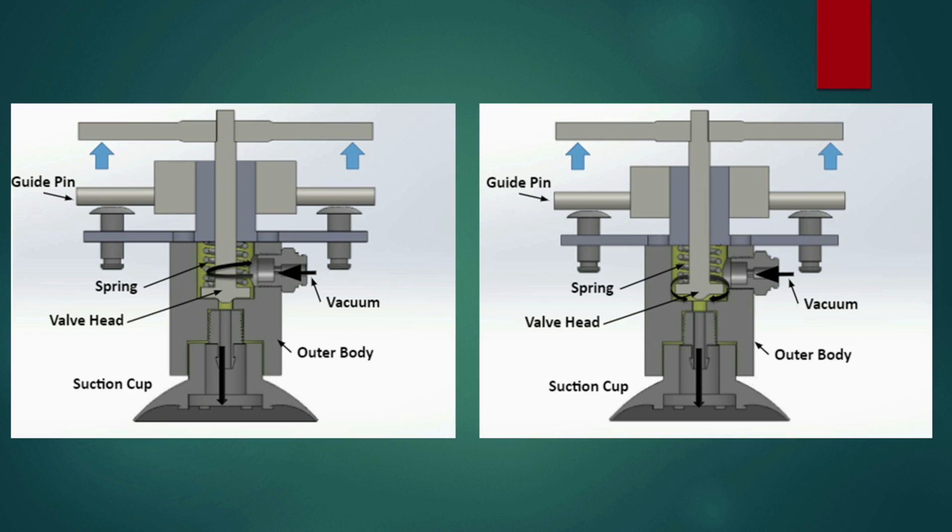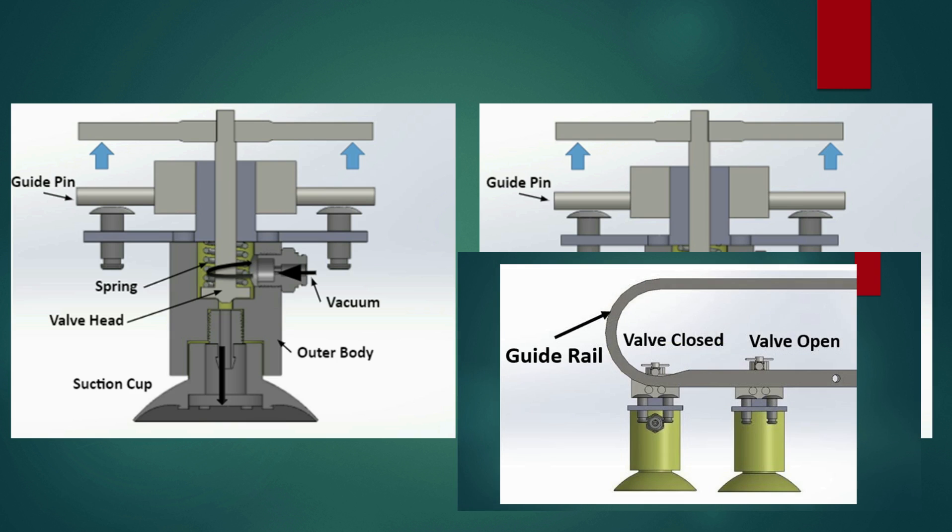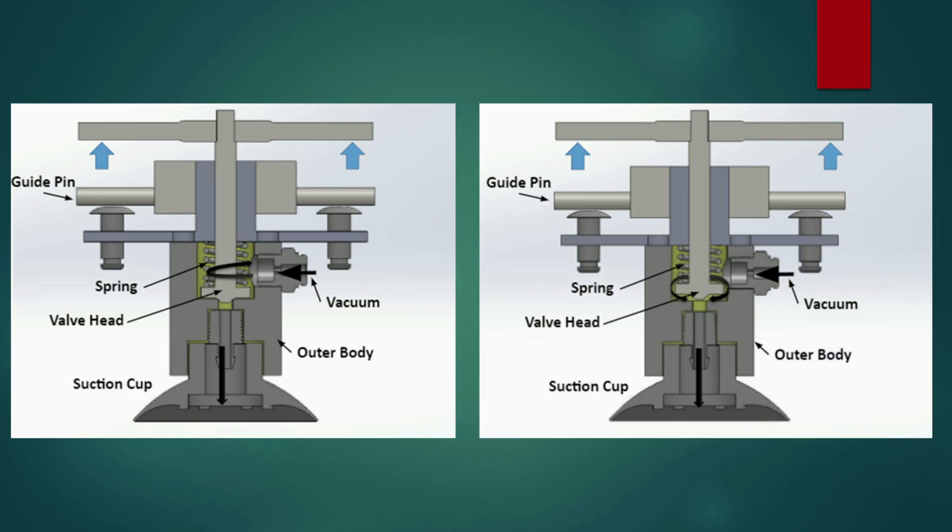Mechanical valve has various components to achieve the objective of switching the vacuum supply on or off for the particular vacuum cup as required. For given two configuration states of the mechanical valve, we can observe the vacuum flow as depicted by the black arrows. Blue arrows denotes the displacement constraint as imposed by the guide rail while the spring applies force to bring it back to the normal state. The guide rail has variable thickness along the path forcing the valve open and close as desired.